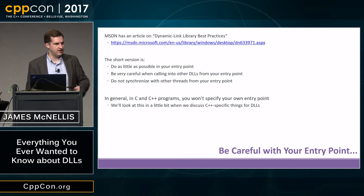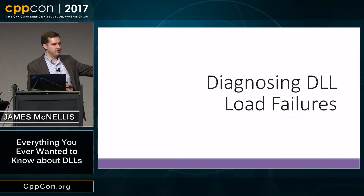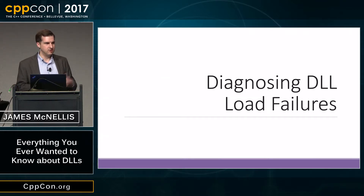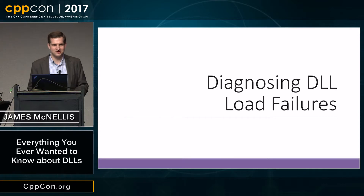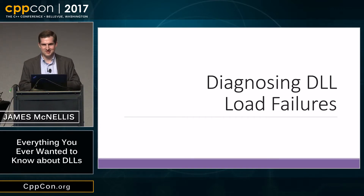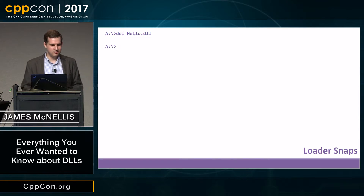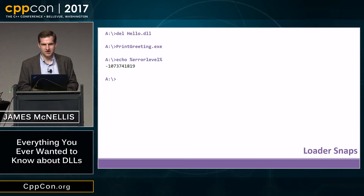In general, in C and C++ programs you won't specify your own entry point — you'll let the C runtime provide it and define DllMain which it will call. That covers what the loader does to load a DLL. But what happens if something fails? How do you diagnose what went wrong? LoadLibrary just returns a null pointer and a status code. I know this talk is early in the morning — if you've fallen asleep, now would be a good time to wake up, because this is the most important thing I'm going to share with you today.